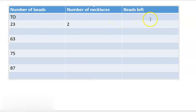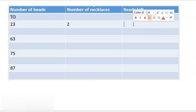And how many beads are left? The 1s column means the beads left — the beads which she is not using. On the 1s place we are having 3, so the answer for beads left is 3.